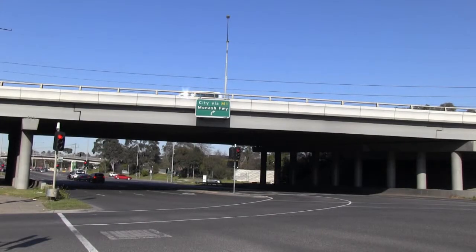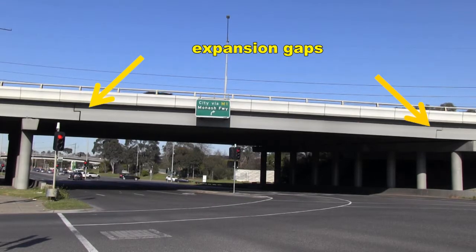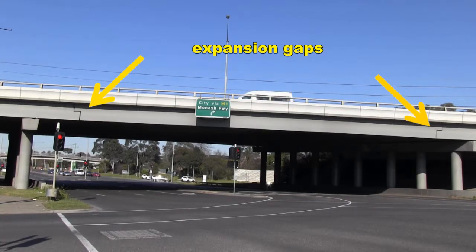Concrete and steel bridges are built with these gaps in them. They're called expansion gaps. The expansion gaps allow for movement when the concrete and steel expand and contract in hot and cold weather.